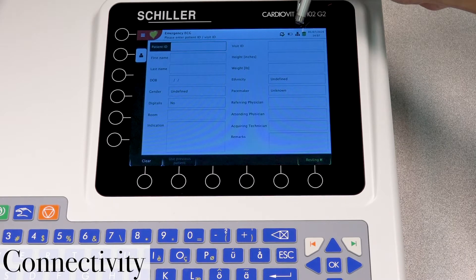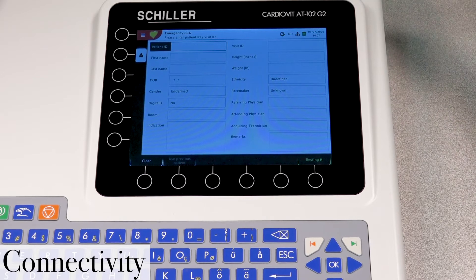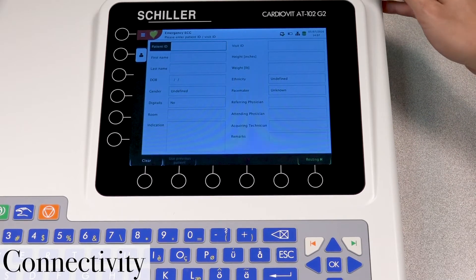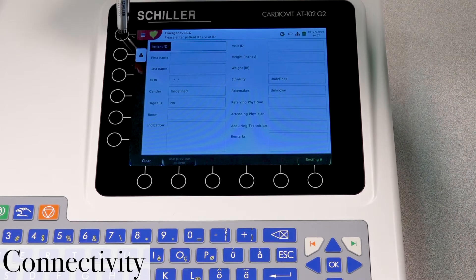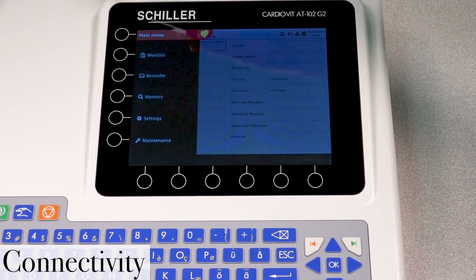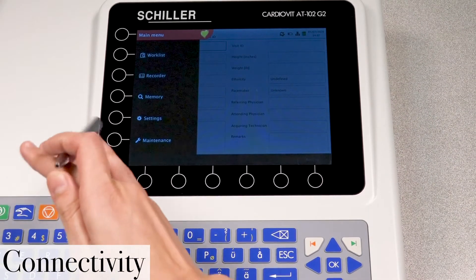So one of the first things that we want to do is check the connectivity settings that we have. We'll access that by pressing the main menu button over here, and then selecting the settings button.